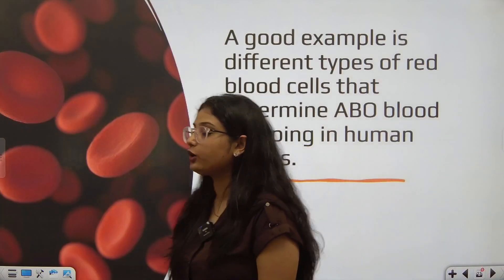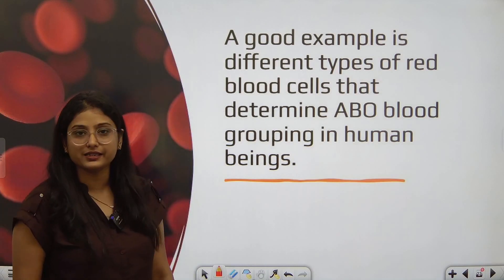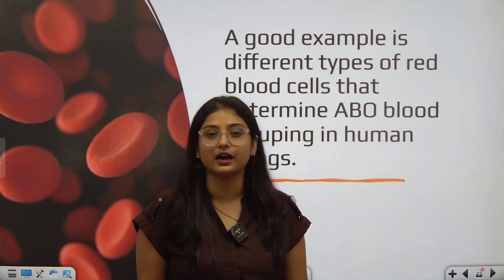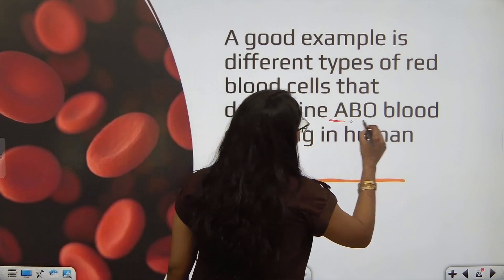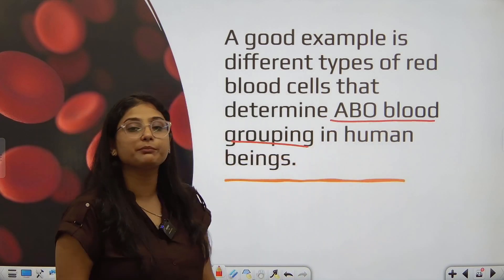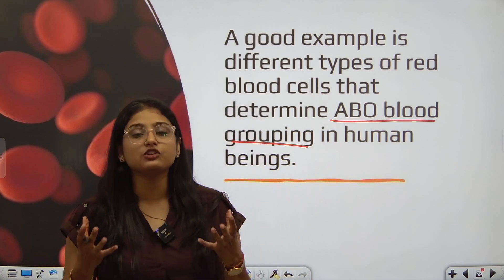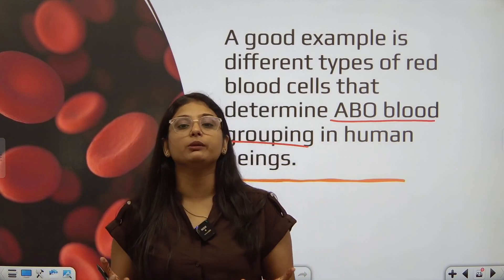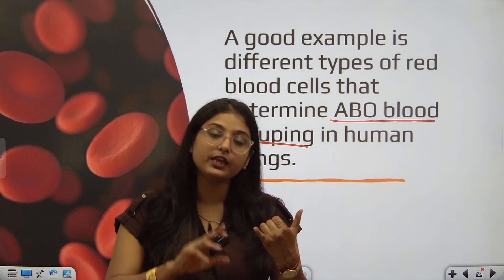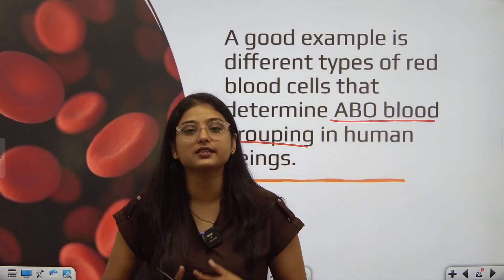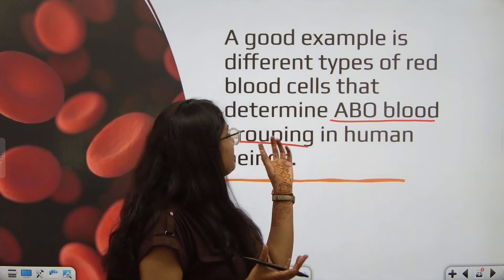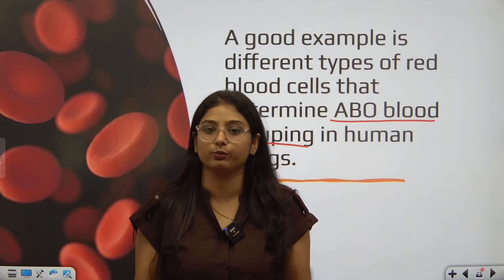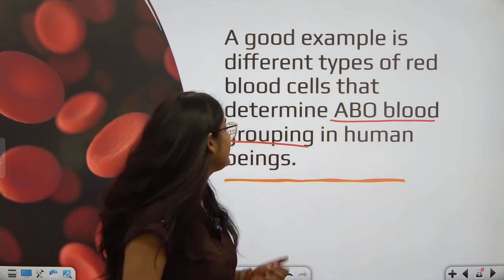A good example to study co-dominance is different types of red blood cells. In our body, blood is a fluid connective tissue made from many cells. One of those cells is RBCs — red blood cells. There are antigens on the surface of red blood cells. These are glycoproteins — carbohydrates plus proteins — placed on RBCs, and each glycoprotein determines our blood group.